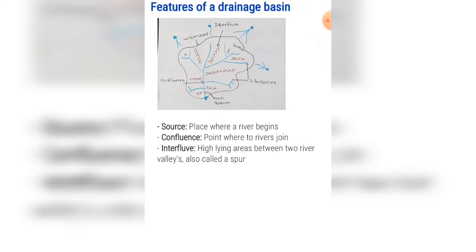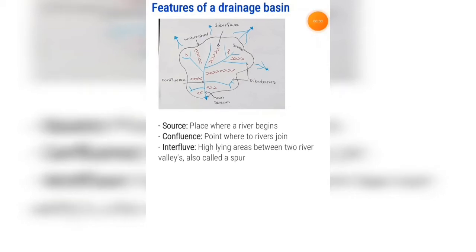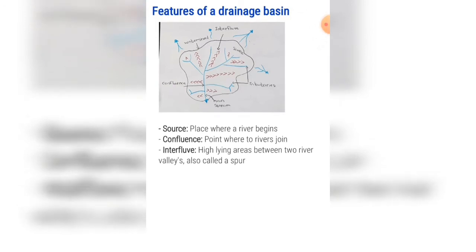This is because all rivers flow downslope — they cannot flow up a slope, so the source will always be higher than the river mouth. Confluence is the point where two rivers join. Interfluve is the high-lying area between two river valleys, also called a spur. In this picture, it is the brown triangles that you can see.